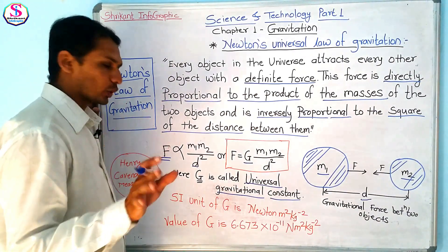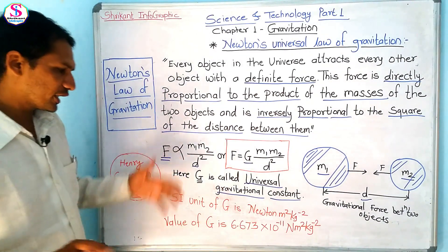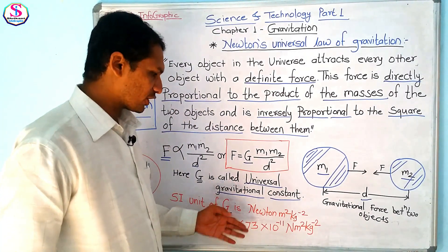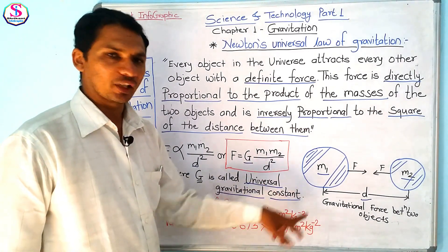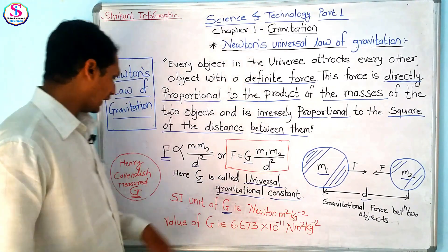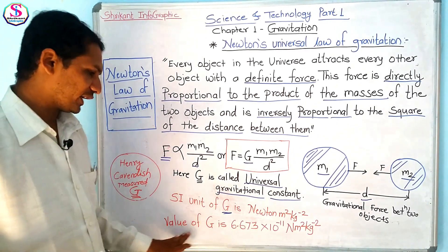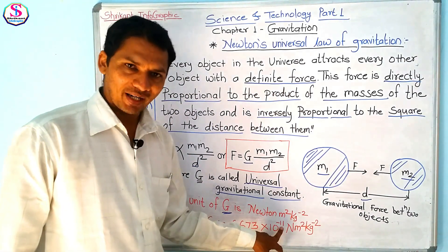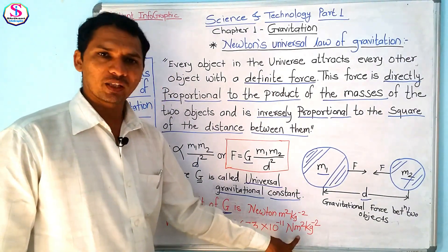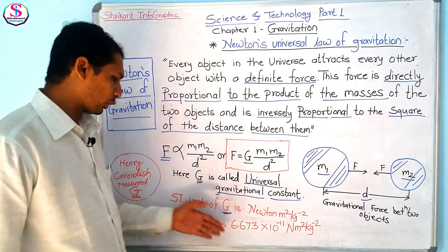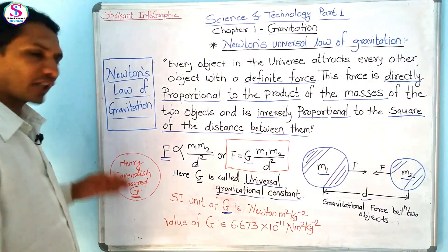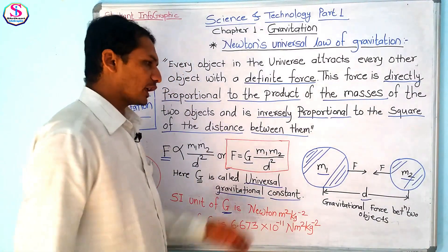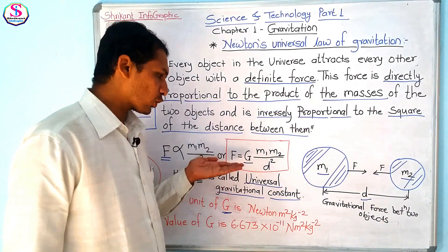The value of G in SI units is measured in Newton meter squared per kilogram squared. Henry Cavendish measured this value, and that value is 6.673 × 10⁻¹¹ N·m²·kg⁻². This is the value derived by Cavendish mathematically.